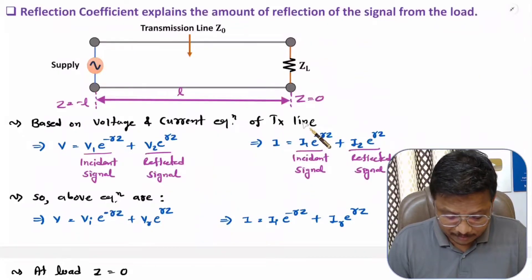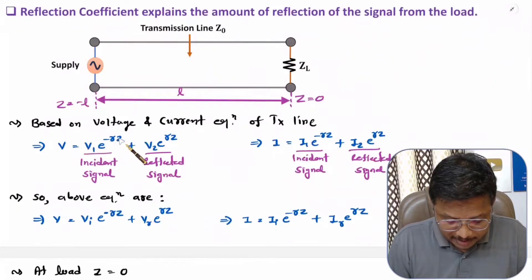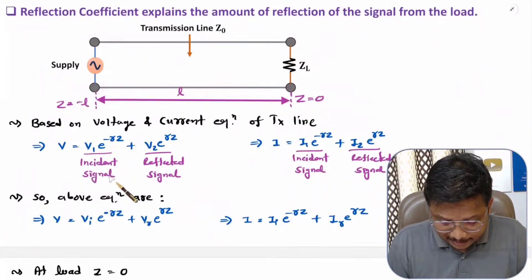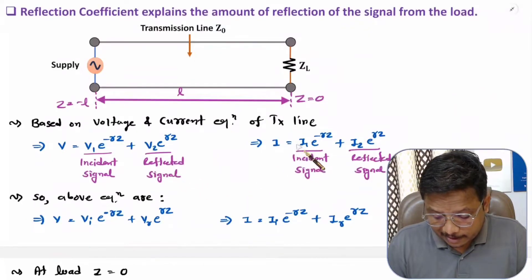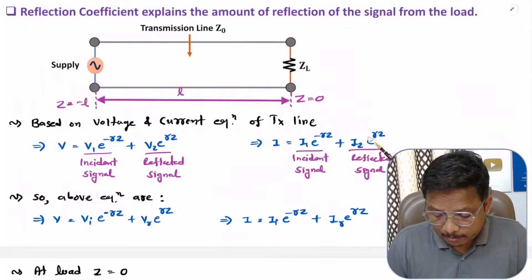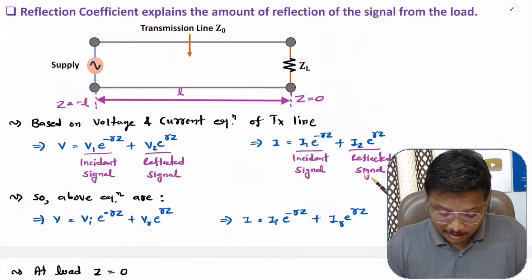The voltage equation of a transmission line is V equals V1·e^(−γz) plus V2·e^(+γz), where V1·e^(−γz) belongs to the incident signal and V2·e^(+γz) belongs to the reflected signal. The current equation is I equals I1·e^(−γz) plus I2·e^(+γz), where the I1 term is for the incident signal and the I2 term is for the reflected signal.